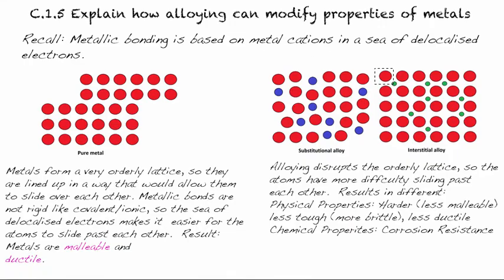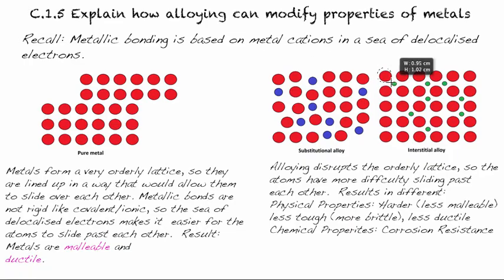Especially, for example, if you're going to slide this atom over by applying some pressure to it, it's going to have to jump over this interstitial one. So again, it can't go in a straight line, which makes it have different properties than this one. So as you can see, it results in different physical properties.